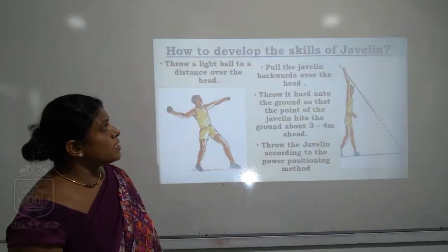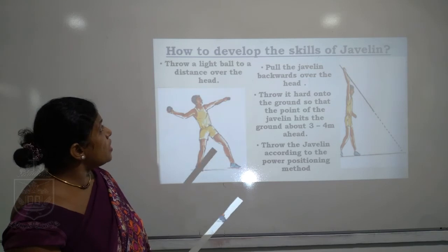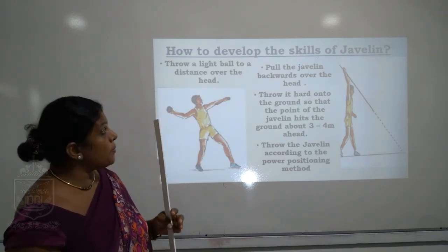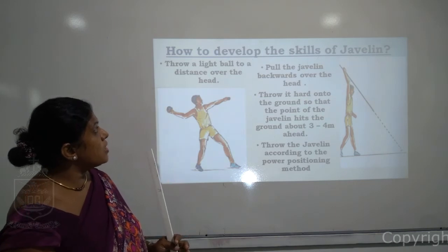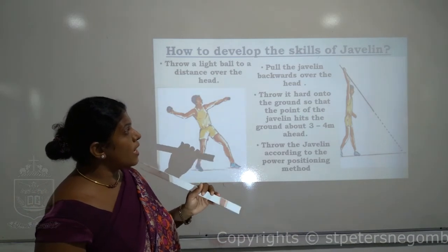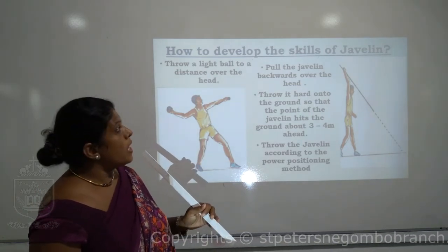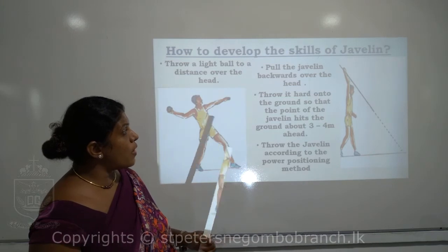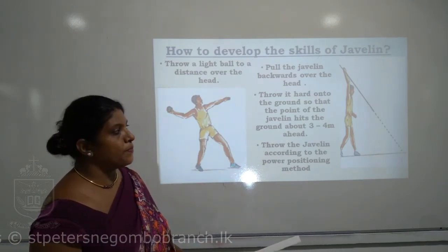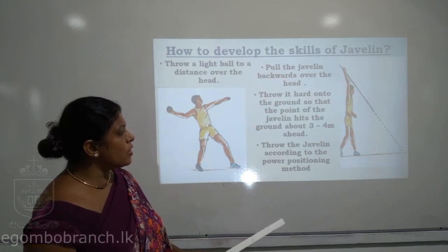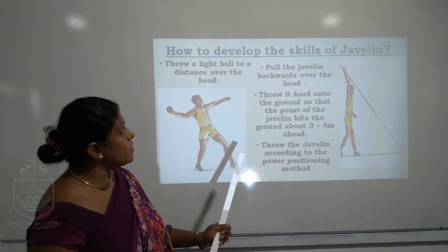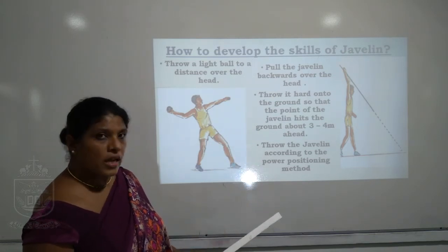How to develop the skills of javelin throw: throw a light object to a distance overhead and practice this several times to improve throwing skills. Put the javelin backward over the head and throw it hard onto the ground so that the point of the javelin hits the ground. Also practice the power positioning methods.